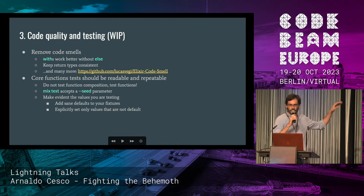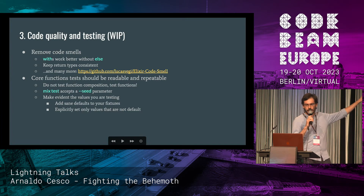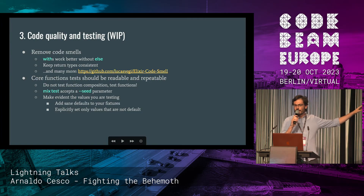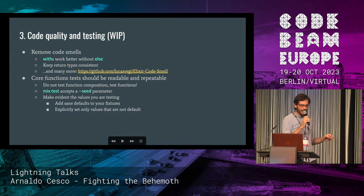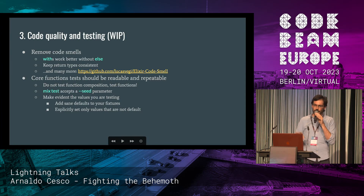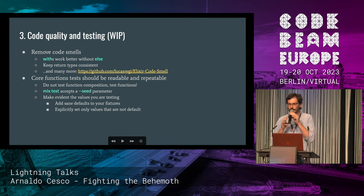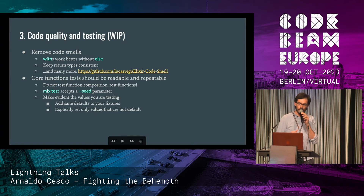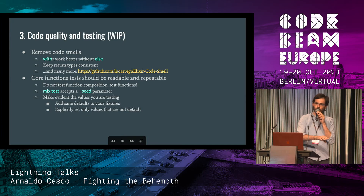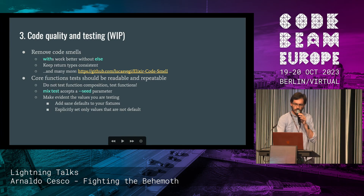This is a work in progress. One thing to do is remove code smells. One that blew my mind is that `with` works better without an else, because they seem like Haskell monads. The other important thing is that the core functions should be tested, and those tests should be readable and repeatable — for example, mix test accepts a seed parameter, which I didn't know about. You have to make evident all the values you're testing on, define default fixtures, and then explicitly set only those values that are not default.